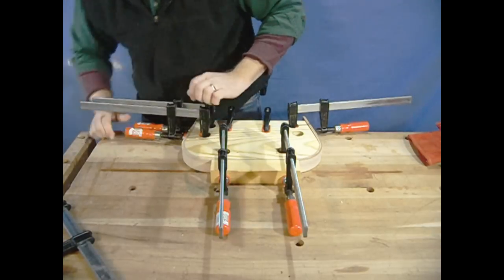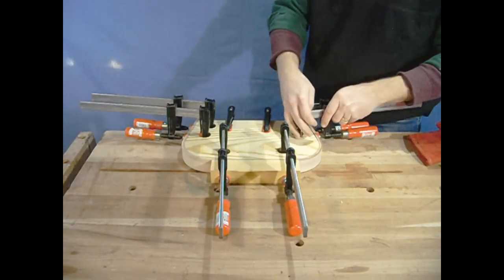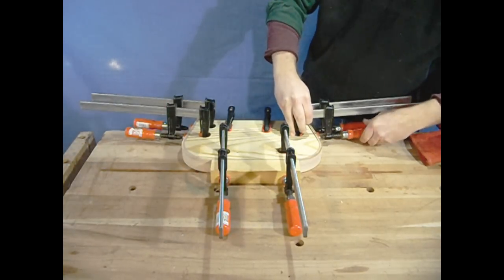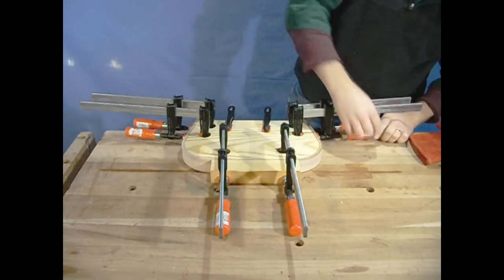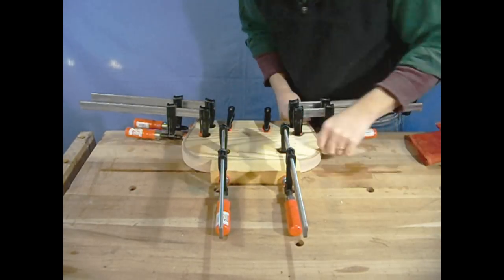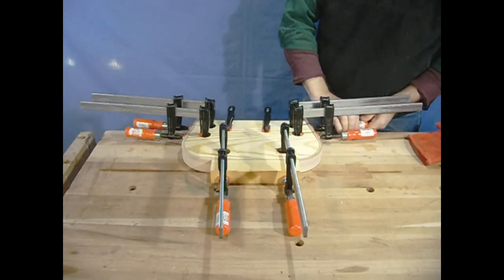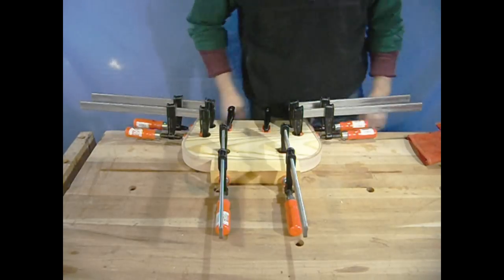Notice how the form actually forces the part into a bend that's more than 90 degrees at the two corners. This is because I know that there will be a certain amount of spring back when I release the dried part from the form. How much to overbend is kind of a matter of experience. As long as you're close, you'll be okay because the part will be flexible once it's dried.